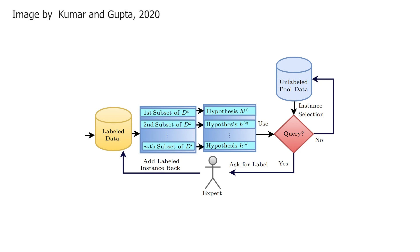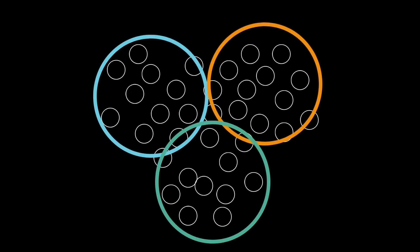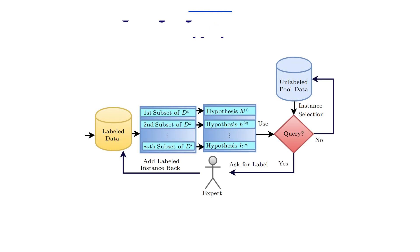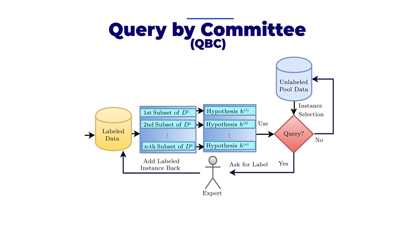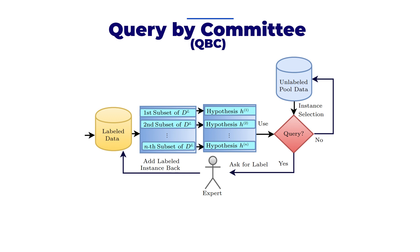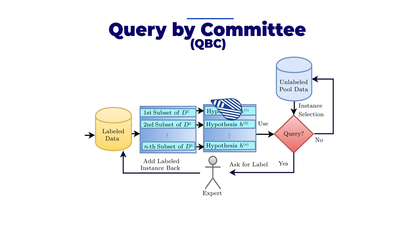Another technique is the Query by Committee, or QBC, approach. Here we have multiple committee models, all trained on a different subset of our labeled data and thus having a different understanding of our problem. These models will each have a hypothesis on the classification of our unlabeled data — somewhat similar but still different, just like us having different life experiences but still sharing the same concepts of a cat and a dog. The data to be annotated is simply the ones our models most disagree on, which means it is complicated to understand. And we start over by feeding the selected data to our experts for annotation.